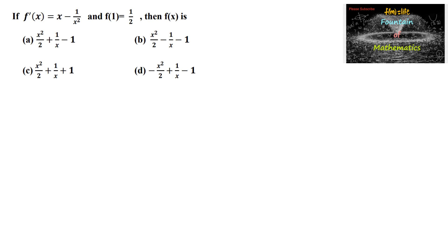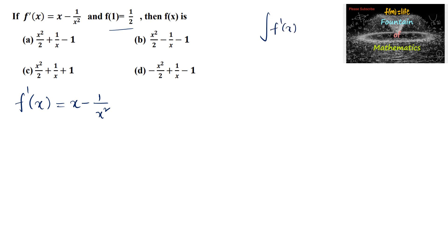If f'(x) is equal to (x minus 1) upon x squared and f(1) is given as 1/2, then find f(x). Given that f'(x) equals (x minus 1) upon x squared, we know that integration of f'(x) dx is equal to f(x) plus c.